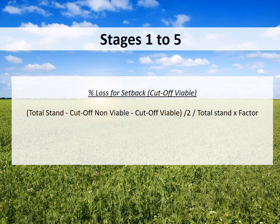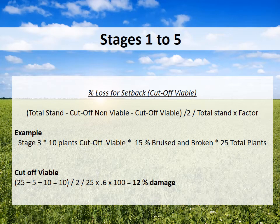Now, to look at the percentage of loss for setback cut-off viable, take the total stand minus the cut-off non-viable, minus the cut-off viable divided by 2, divided by the total stand, multiplied by the factor. In this example: stage 3 plant, 10 plants cut off viable, 15% bruised and broken, out of a total of 25 plants. For the cut-off viable, we take 25 minus 5 (cut-off non-viable) minus 10 (cut-off viable), divided by 2, divided by 25, multiplied by 0.6 (the stage factor), multiplied by 100, to give a 12% damage.